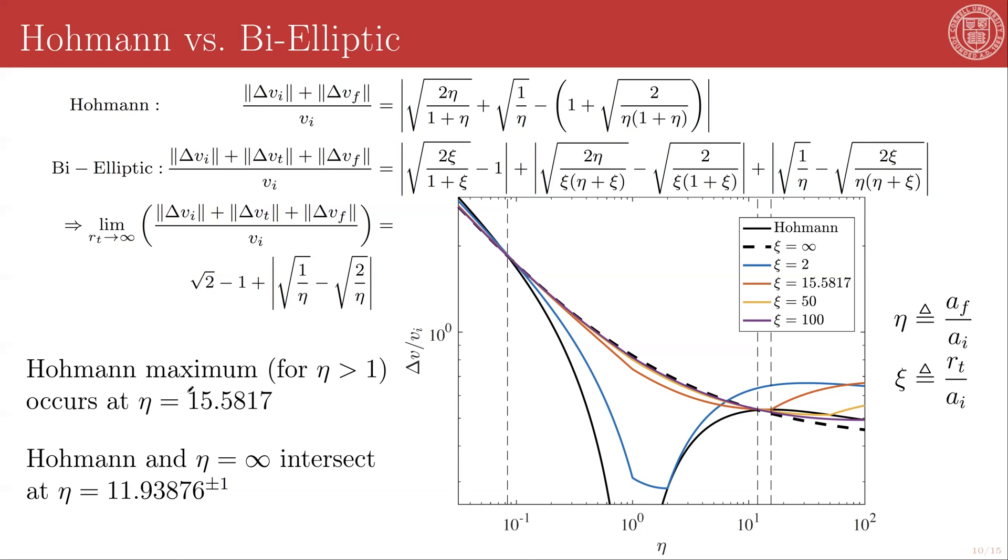The maximum value for the Hohmann curve occurs at 15.58 and a bit, which is the curve being shown here in red right there. So to summarize, in this range between 1 over 11.9 and 11.9, the Hohmann is always more efficient. Above 15.5817, the bi-elliptic will be more efficient so long as xi is greater than eta, and below 1 over 11.9, the bi-elliptic will always unconditionally be more efficient.